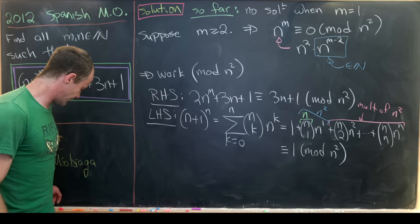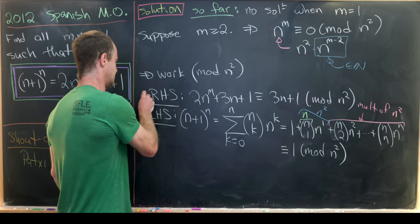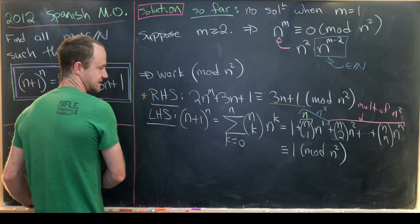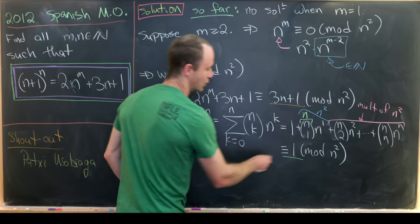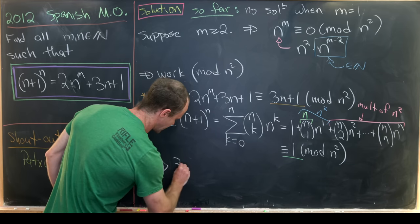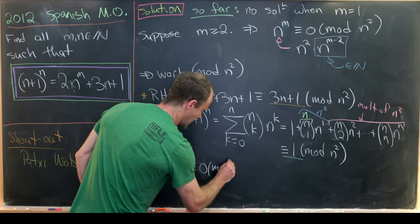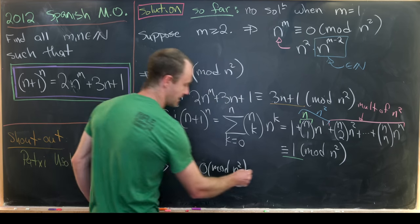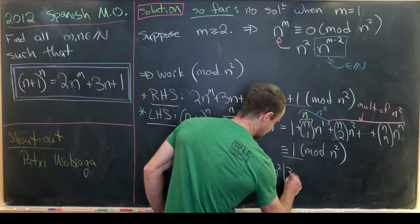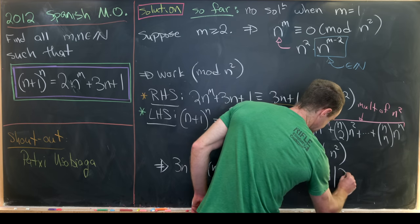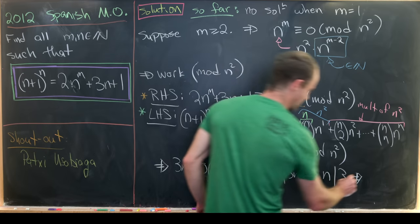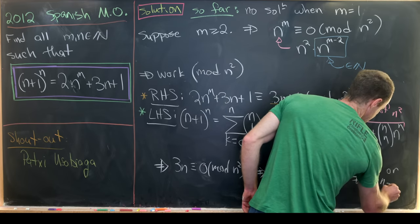But let's look at what we've really got here. We have this right-hand side is congruent to 3n + 1 mod n^2, whereas this left-hand side is congruent to 1 mod n^2. But putting those two things together, we see that 3n is congruent to 0 mod n^2. But that means that n^2 divides 3n. So n^2 divides 3n, but that means that n divides 3. But if n divides 3, since 3 is a prime, that means that n equals 1 or n equals 3.